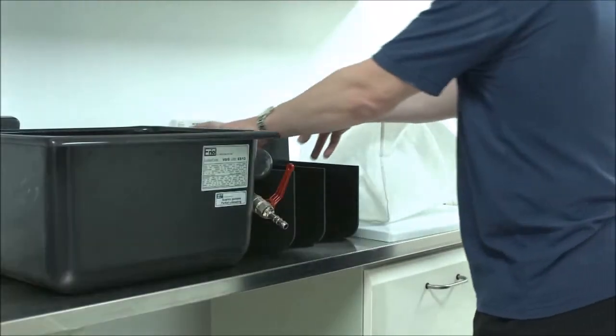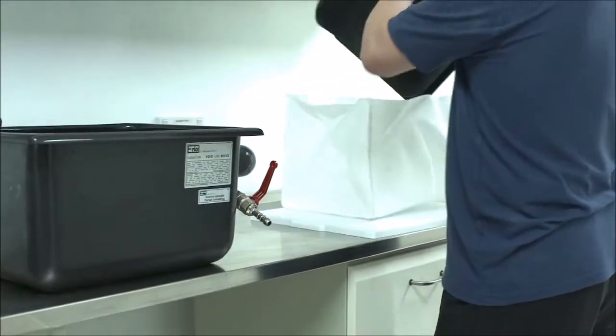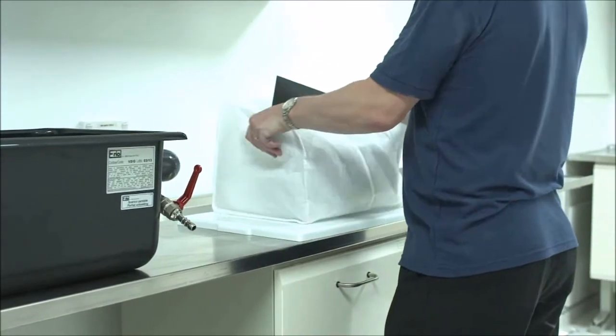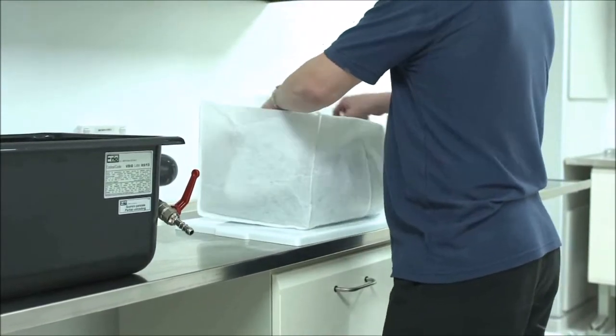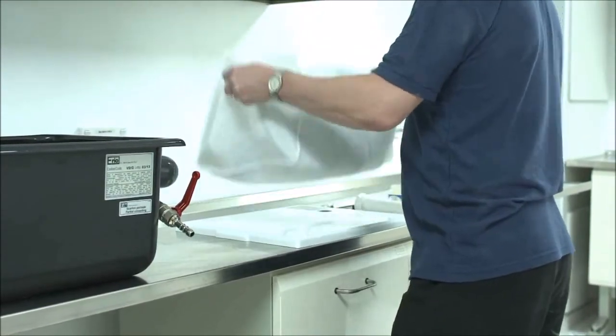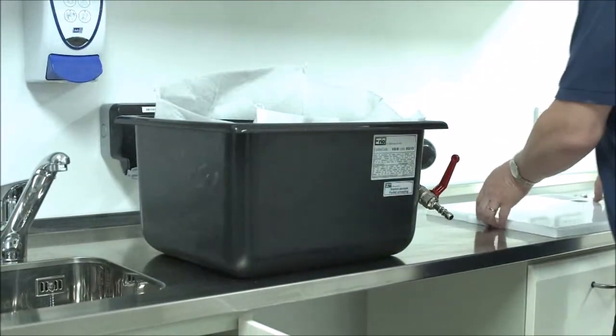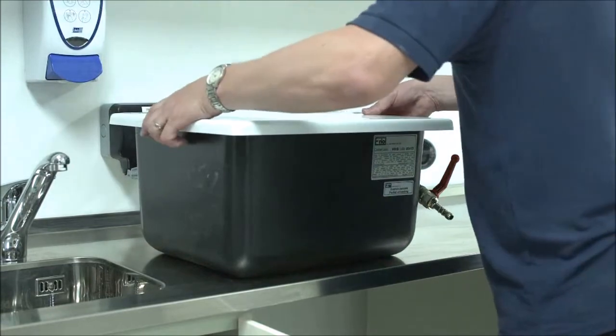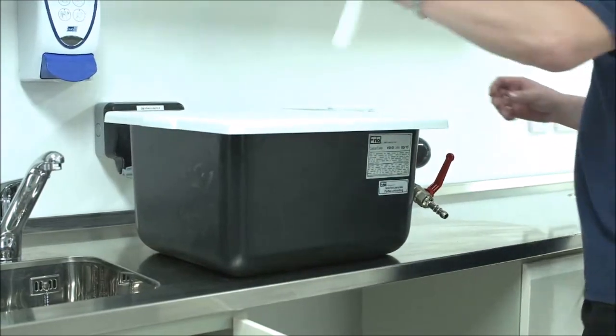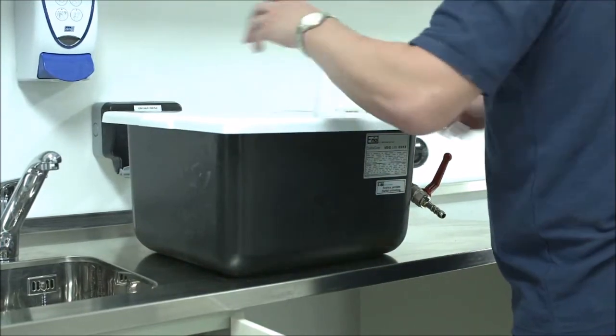Take a new bag, put the dividers in, place this back into the decantation unit. Put the lid on and the connection. Place back into the cabinet.